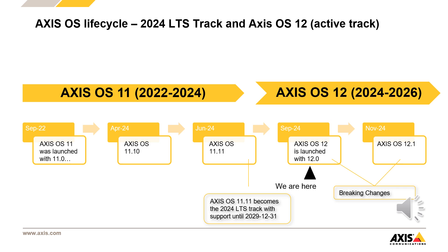Let's look at where we are on a detailed plan. The AxisOS 11 version has been discontinued as an active track and is in transition to a new LTS track called 2024 LTS, which is covered in a separate video published recently. It is now time to increment the major version of AxisOS active track, starting with the release of AxisOS 12.0.